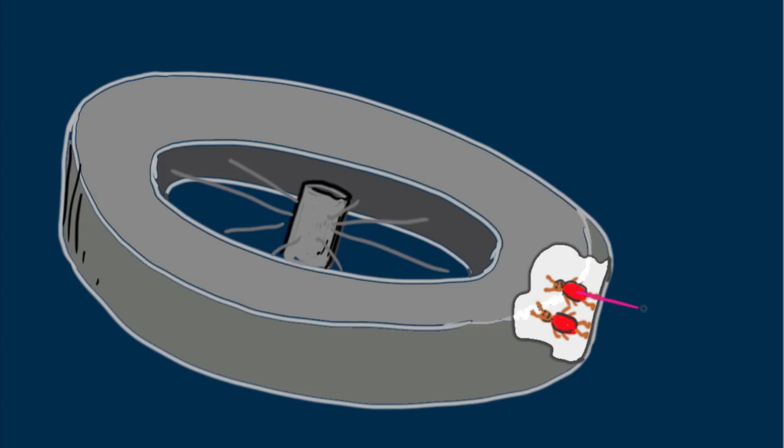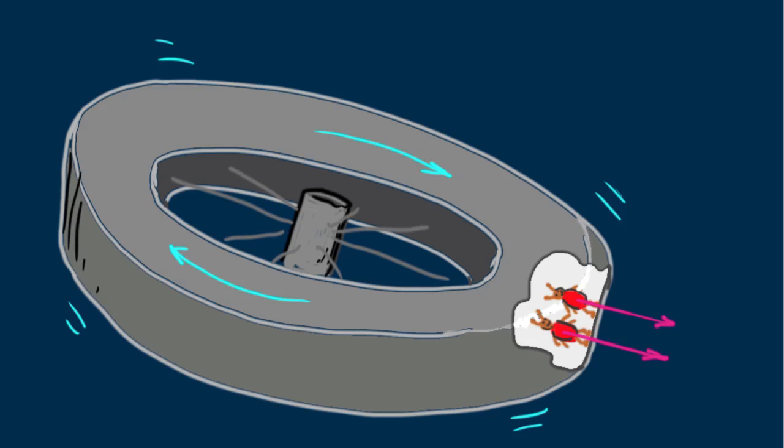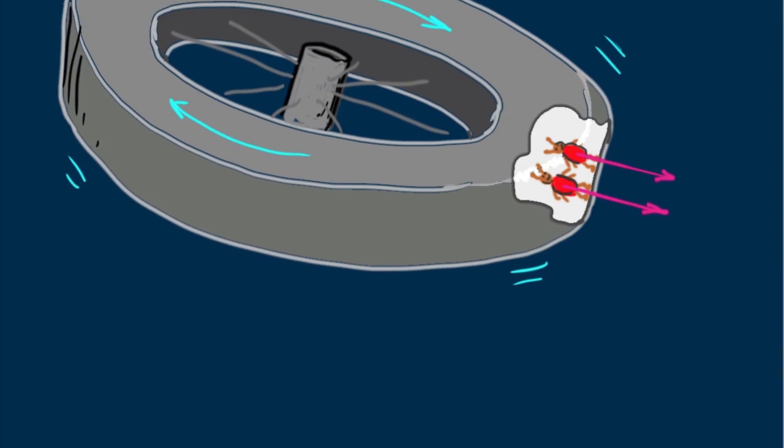Now spin the tire and the bugs will feel themselves pressed to the outer part of the tire's interior. They won't feel like they're falling anymore. They will feel simulated gravity. To the bugs, the direction down would be radially outward. Think about that.